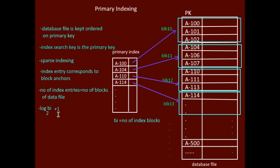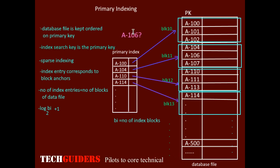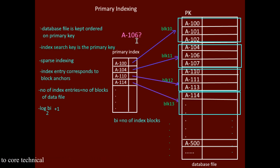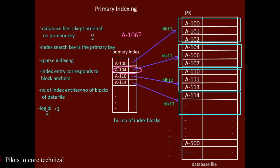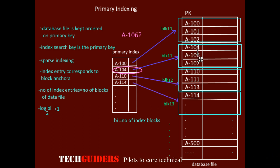To search for a particular record, first search the primary index using binary search since the index is ordered. Find an index entry such that the index search key is equal to or just less than the search value. Get the block pointer from that entry, access the corresponding block, and then sequentially search the entries of the block to access the required record if it is present.